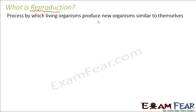Reproduction is the process by which living organisms produce new organisms similar to themselves. Children are basically new organisms being produced by the existing organisms, similar to themselves.